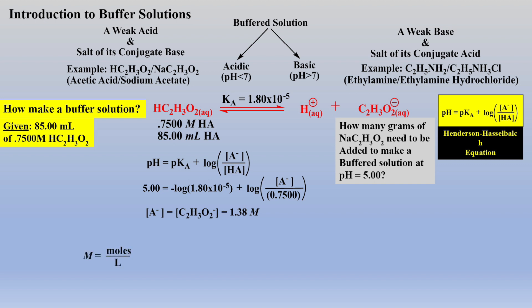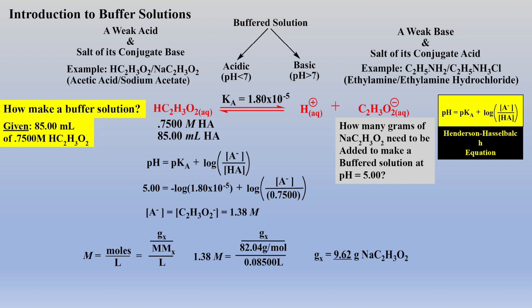Recalling our definition of molarity and expanding what moles is equal to — grams over molar mass — allows us to easily calculate the grams of sodium acetate required by substituting molarity and molar mass of sodium acetate within the 85-milliliter solution. Thus, weighing out 9.62 grams of sodium acetate and dissolving it in the 85 milliliters of weak acid solution should give a final pH of 5 for this buffer solution, assuming there is no change in volume.